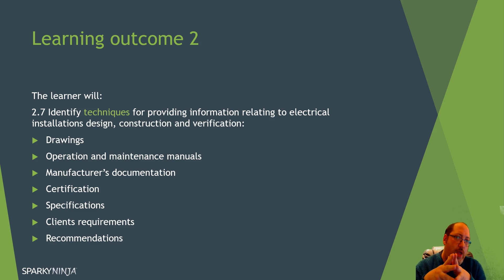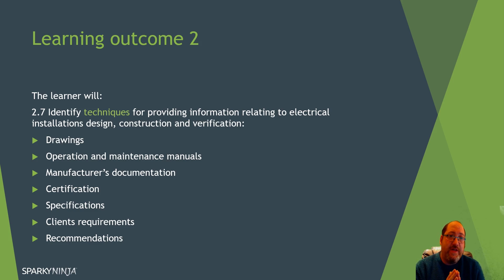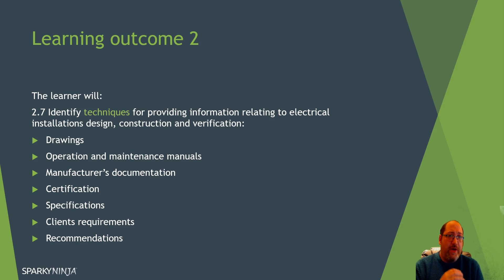Outcome 2.7: the learner will identify techniques — keyword: techniques — for providing information relating to electrical installation design, construction, and verification. What methods or techniques are there to give information to the client? We have drawings, manuals, manufacturers' documentation, certification, specifications, any client requirements, and recommendations for the electrical installation. You can even include meetings. The key point is not just what you give them, but what techniques are there to provide information effectively.